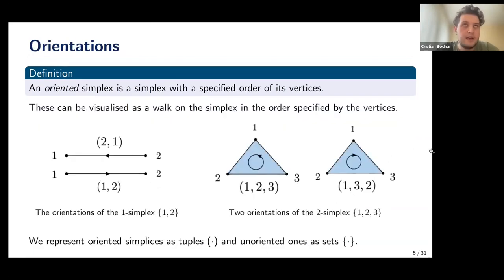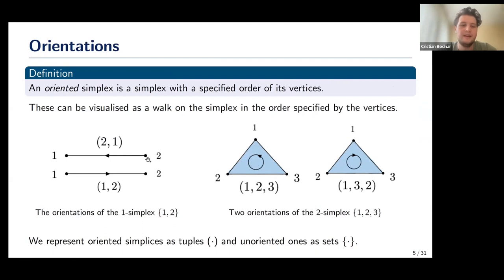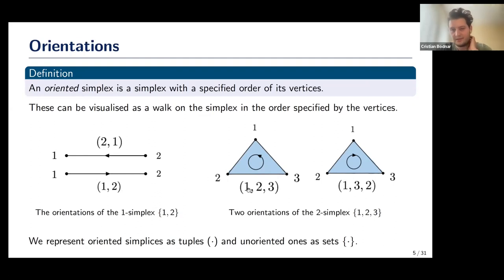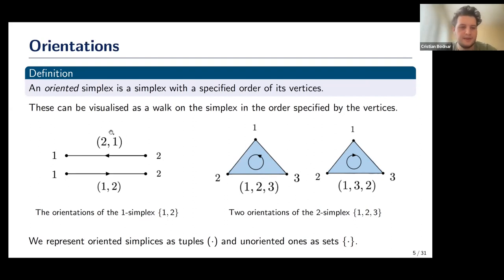Often we work with something called orientations — we associate an orientation with each simplex. We can treat simplices as tuples rather than sets. For an edge, writing (2,1) means moving from node 2 toward node 1, while (1,2) means moving from node 1 to node 2 — the orientation expresses a direction of movement along that edge. This is also valid for two-simplices: (1,2,3) means rotating around the triangle in that order (anti-clockwise), or (1,3,2) goes the other way (clockwise).